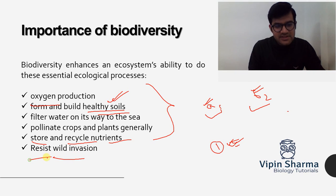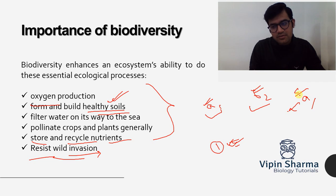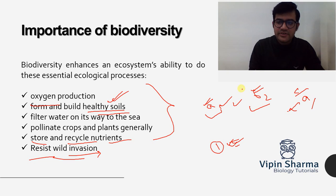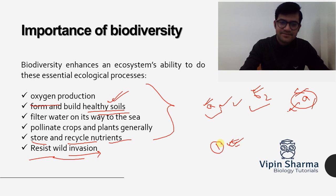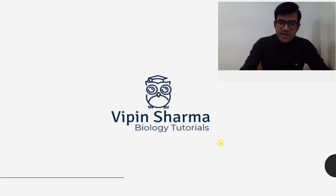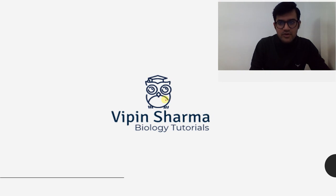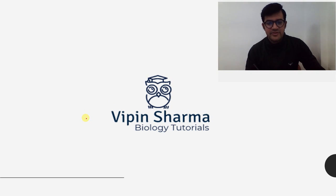Regarding resisting foreign invasions — when an alien species enters a community, there will be some species with the ability to counteract it. More species means the community has more tools to deal with alien species invasion. That's it for this video — I hope you enjoyed and learned from it. If you liked the video, please hit the like button and keep watching Webin Sharma Biology Tutorials. Thank you.